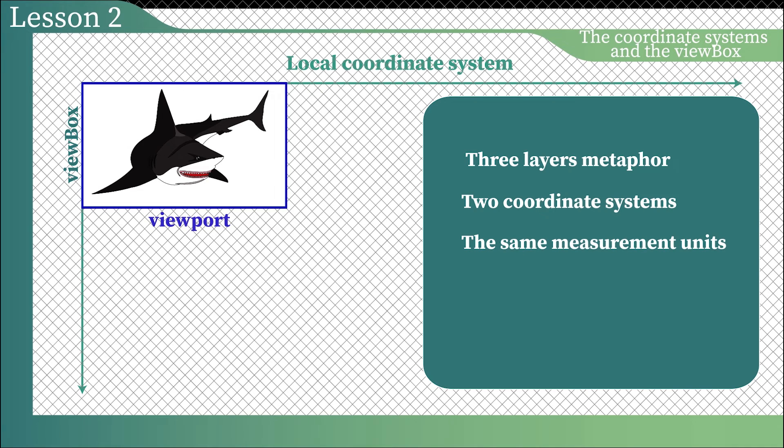The layers have different roles. The viewport is the frame that plays a role of placeholder. The viewbox is the hole in the mask layer. And the local coordinate system is the drawing layer. And that's all for now. Do your homework and I will see you in the next lesson.